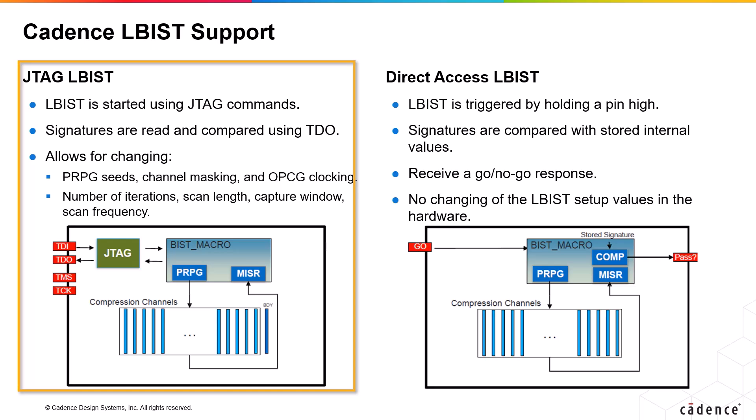JTAG LBIST allows for changing PRPG seeds, channel masking, and OPCG clocking. Configurable parameters include number of iterations, scan length, capture window, and scan frequency.